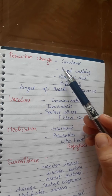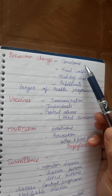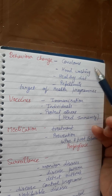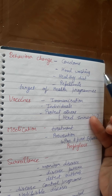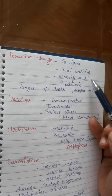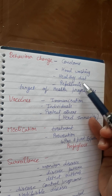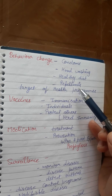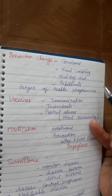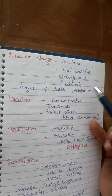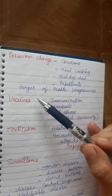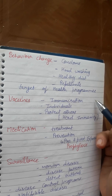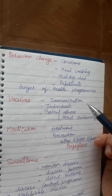For behavior change, for example, using condoms protects against sexually transmitted diseases. Hand washing is a behavior change that is useful for preventing transmission of disease. A healthy diet is also important in reducing the risk of disease. Repellents are important to prevent mosquito-borne diseases like malaria and dengue. These are the targets of health programs — how behavior change can prevent disease.